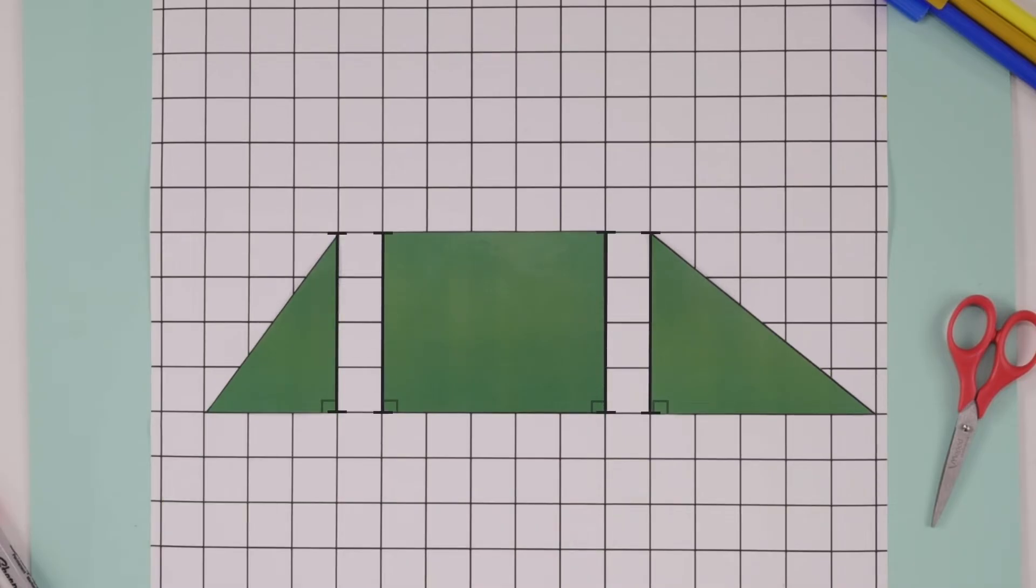The height of each shape is the distance between the parallel sides, i.e. 4 inches. This triangle's base is 3 inches, so its area must be half times 3 times 4 or 6 square inches. The rectangle's area must be 5 times 4 or 20 square inches.